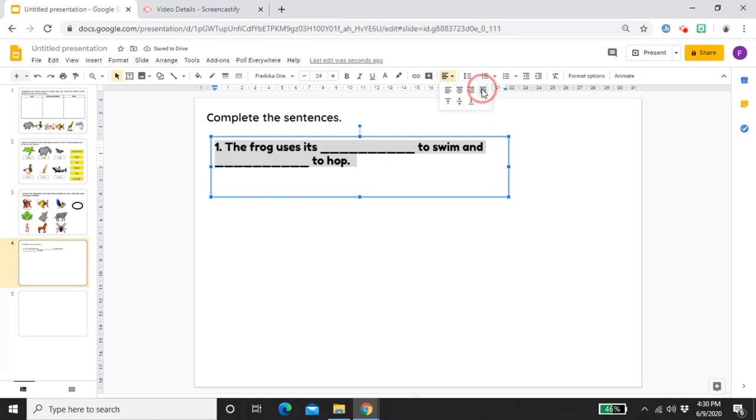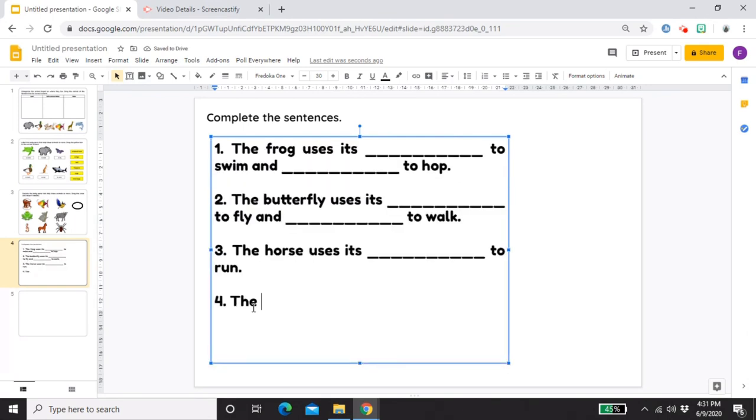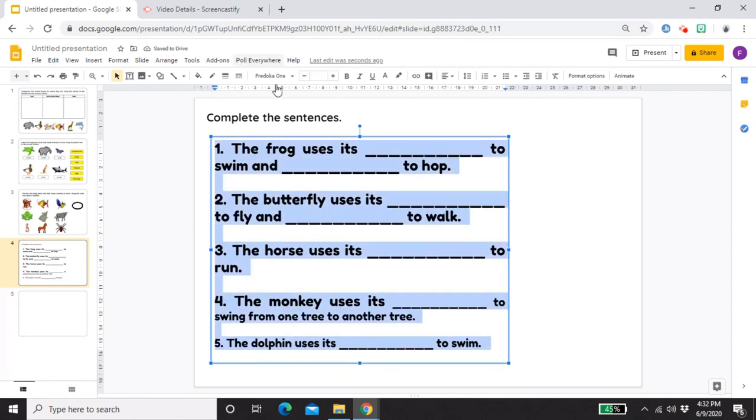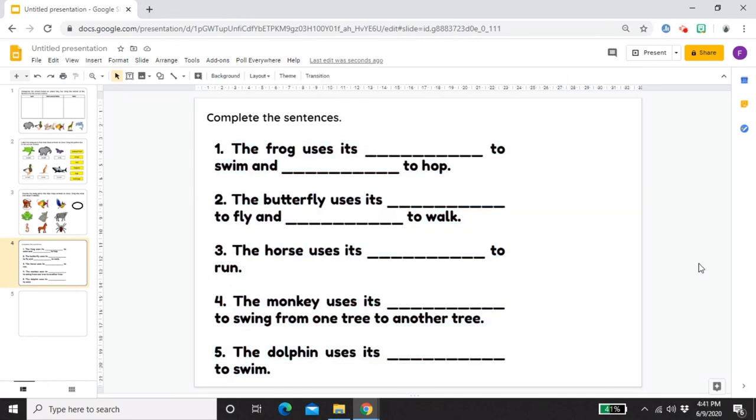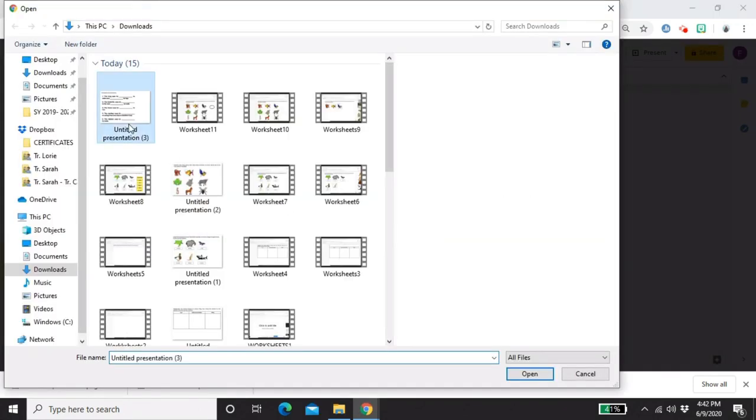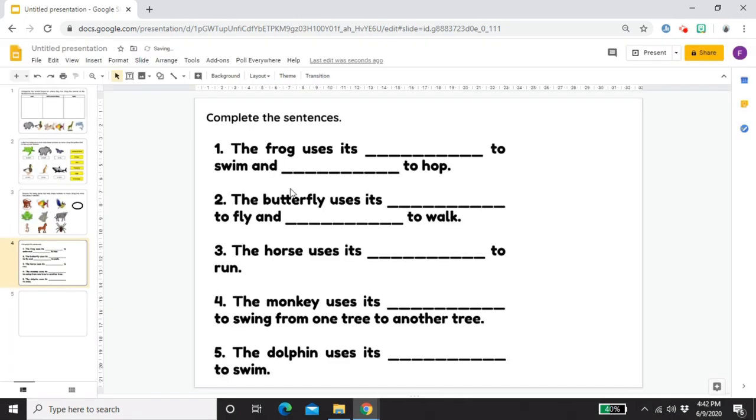As you can see, the font got smaller, but we'll fix it later. Control A, then 30. I think it's okay now. This worksheet can be a drag and drop worksheet and also fill in the blank like I told you. But this time, this is the part I don't want students to move. So save it again as PNG.